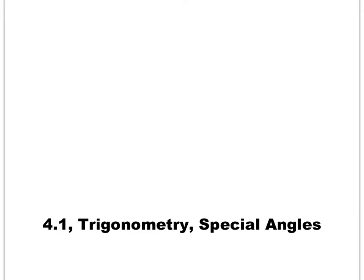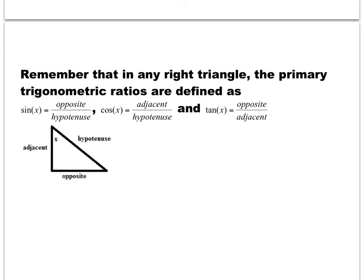In today's lesson we are going to talk about special angles in trigonometry. But before we start, we are going to refresh our memory about what we learned previously in grade 10. When dealing with any right triangle — meaning one of the angles is 90 degrees — we can define the following trig ratios.